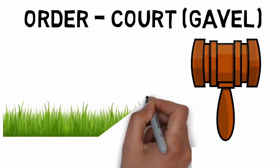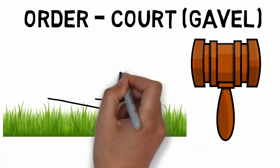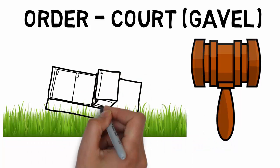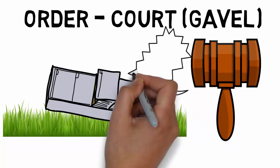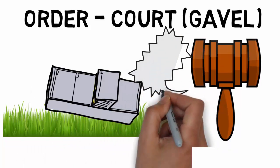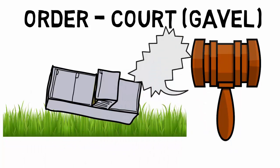So maybe the file cabinet is rolling around in this freshly cut grass and this gavel sees it and starts to scream at the file cabinet, because the gavel just cut that grass and is very upset that the file cabinet is rolling around in it.